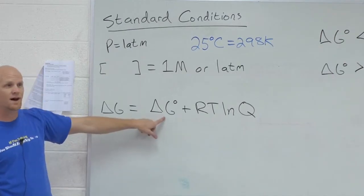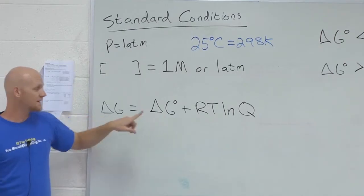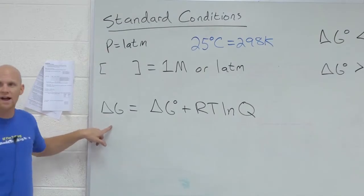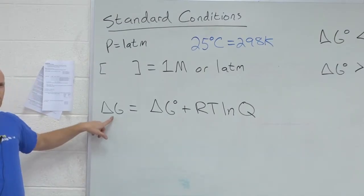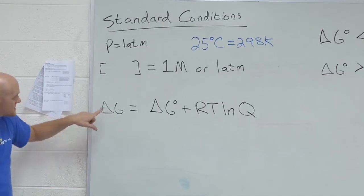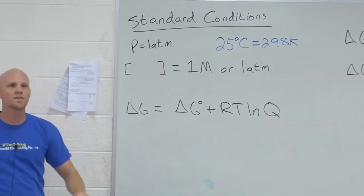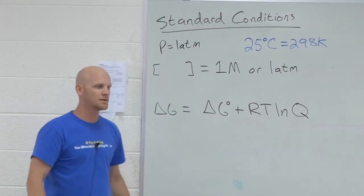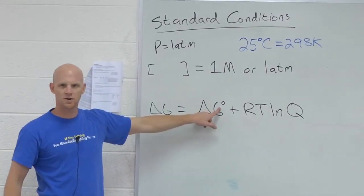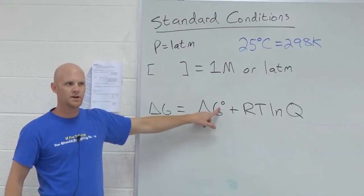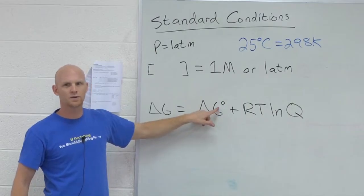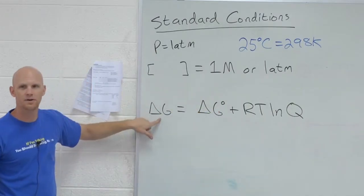It's this value, though, that ever changes. As the reaction goes on, this number is either going to get bigger or smaller, depending on which direction reactions go in and stuff like that. This is the one that changes. So when the reaction reaches equilibrium, will this number that you looked up in a book still be any different? No. But when the reaction reaches equilibrium, this number is now what? Zero.